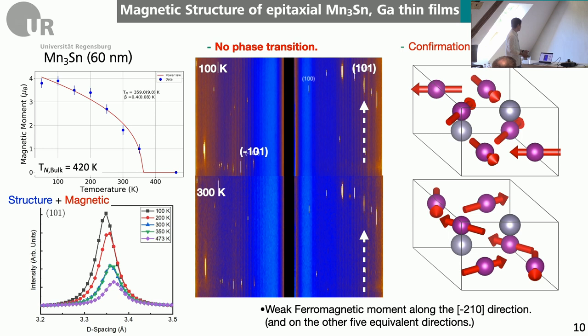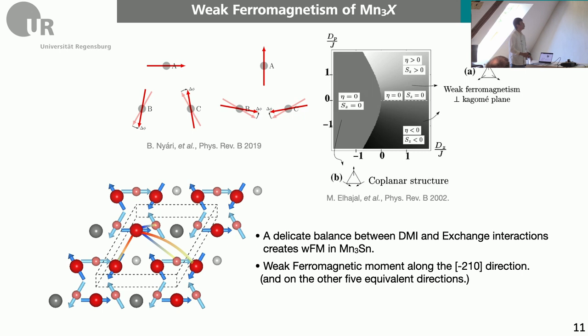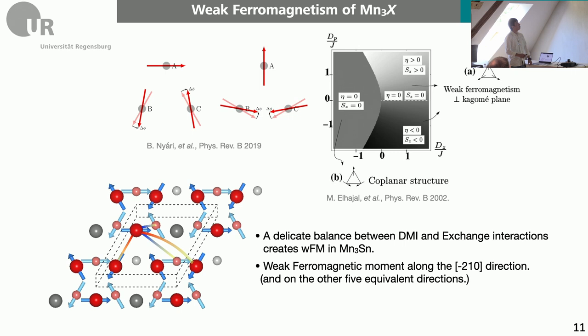One more interesting thing about this system is that it could show weak ferromagnetic moment while the spin configuration is antiferromagnetically ordered. Because this Kagome lattice is in the basal A-B plane, the Kagome plane breaks lots of symmetry. Due to the in-plane or out-of-plane DMI interaction you could have two different spin structures. The theoretical prediction is that in this kind of structure there can be positive or negative out-of-plane DMI interaction.